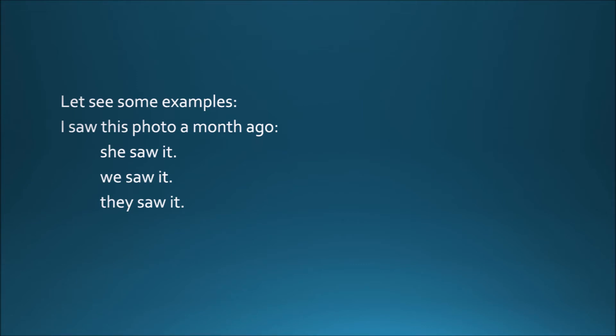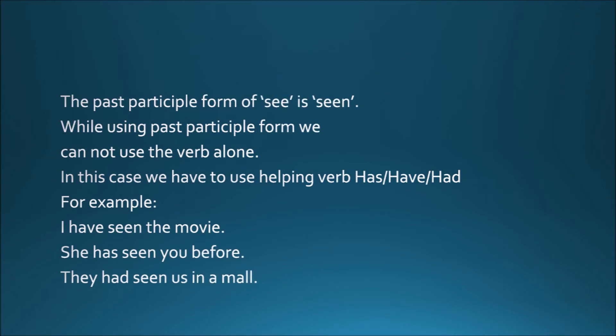I saw this photo a month ago. She saw it. We saw it. They saw it. The past participle form of see is 'seen'.